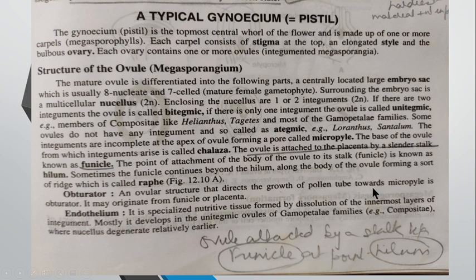Endothelium is a specialized nutritive tissue formed by the dissolution of the innermost layer of the integument. As discussed, there are one or two integuments. If the innermost layer of the integument gets dissolved, it works as a nutritive tissue for the developing ovule, and in that case it is known as the endothelium.